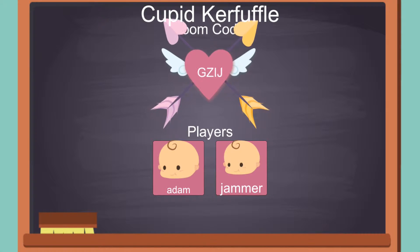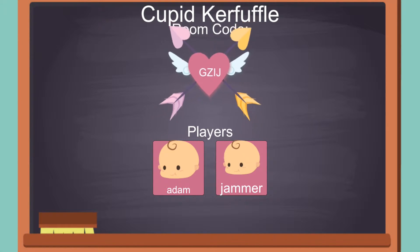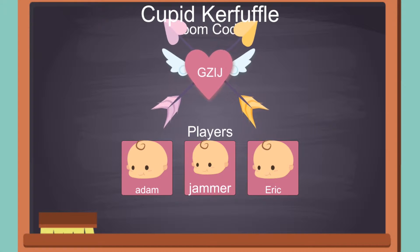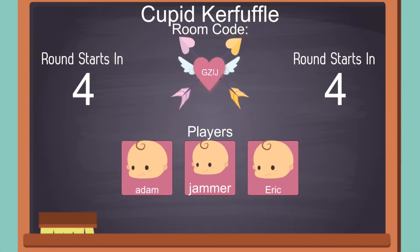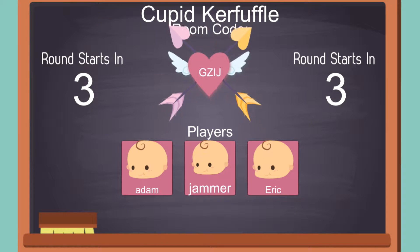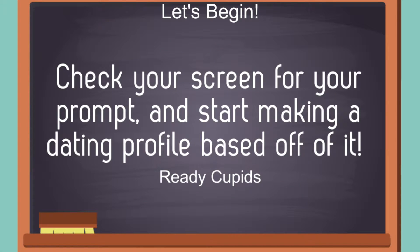Cupid Kerfuffle has three main components: character baking, matchmaking, and opinion staking. The game is split into rounds, with the number of rounds equal to the number of players. Each round consists of two distinct phases: creation and ranking.